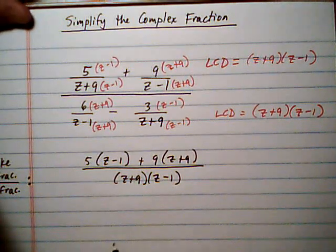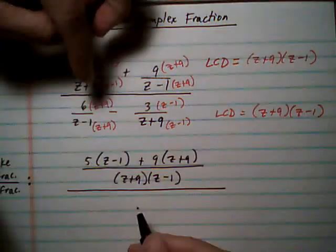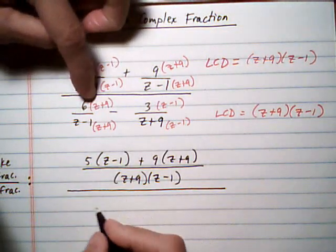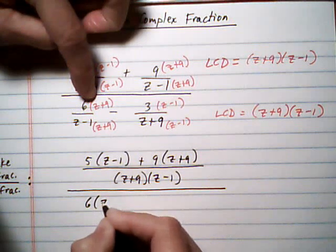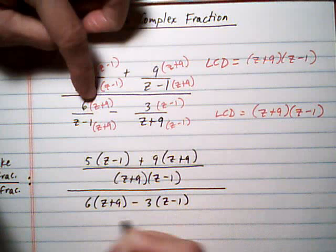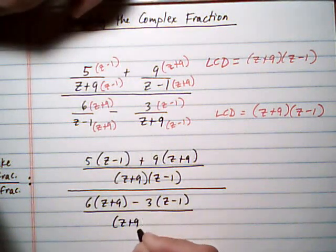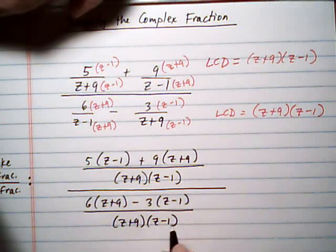So that's the top fraction, and that's being divided by the bottom fraction. Again, go right across the top. 6, z plus 9, take away 3, z minus 1, all over common denominator, z plus 9, z minus 1.